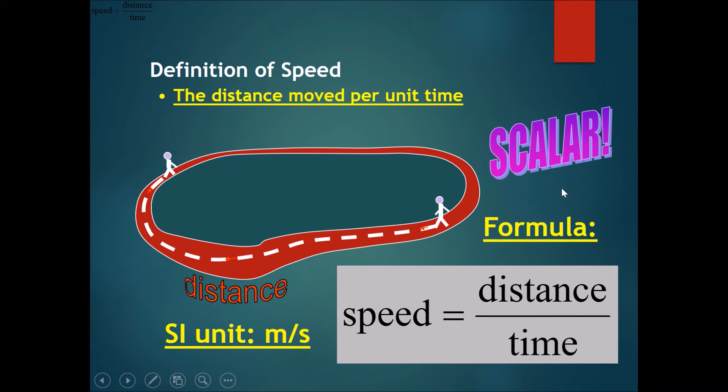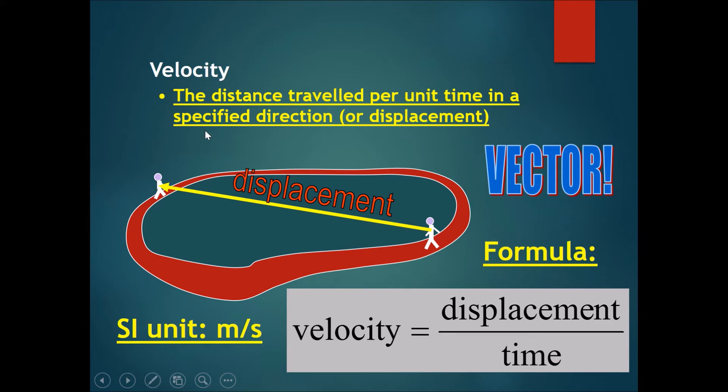Now let's compare it to something else that is similar to speed but slightly different. This is called velocity. Velocity is also the distance traveled per unit time; however, it's slightly different because it only counts the distance traveled in a specific direction, which is represented by displacement.